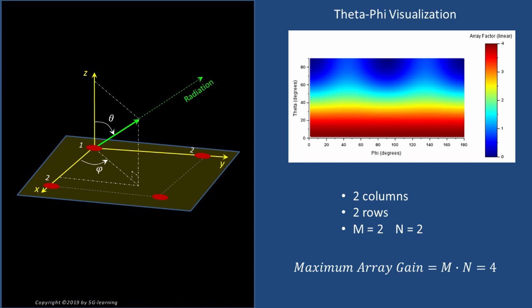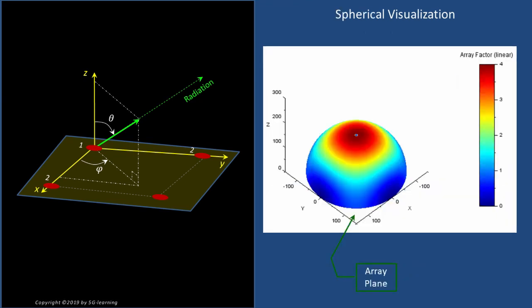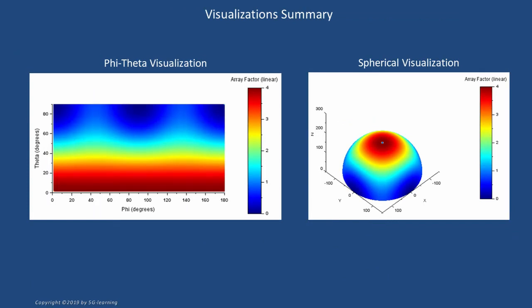As you may recall from a previous section, the maximum array factor equals the number of elements per column times the number per row. In this example, this maximum is 4. In another visualization type, we paint the array factor for each 3D direction on the surface of a sphere placed at the array center — with radius much longer than the array dimension, here 300 wavelengths — using the same rainbow convention. In summary, we may represent the 3D behavior of a uniform rectangular array using either the phi-theta or the spherical representation.